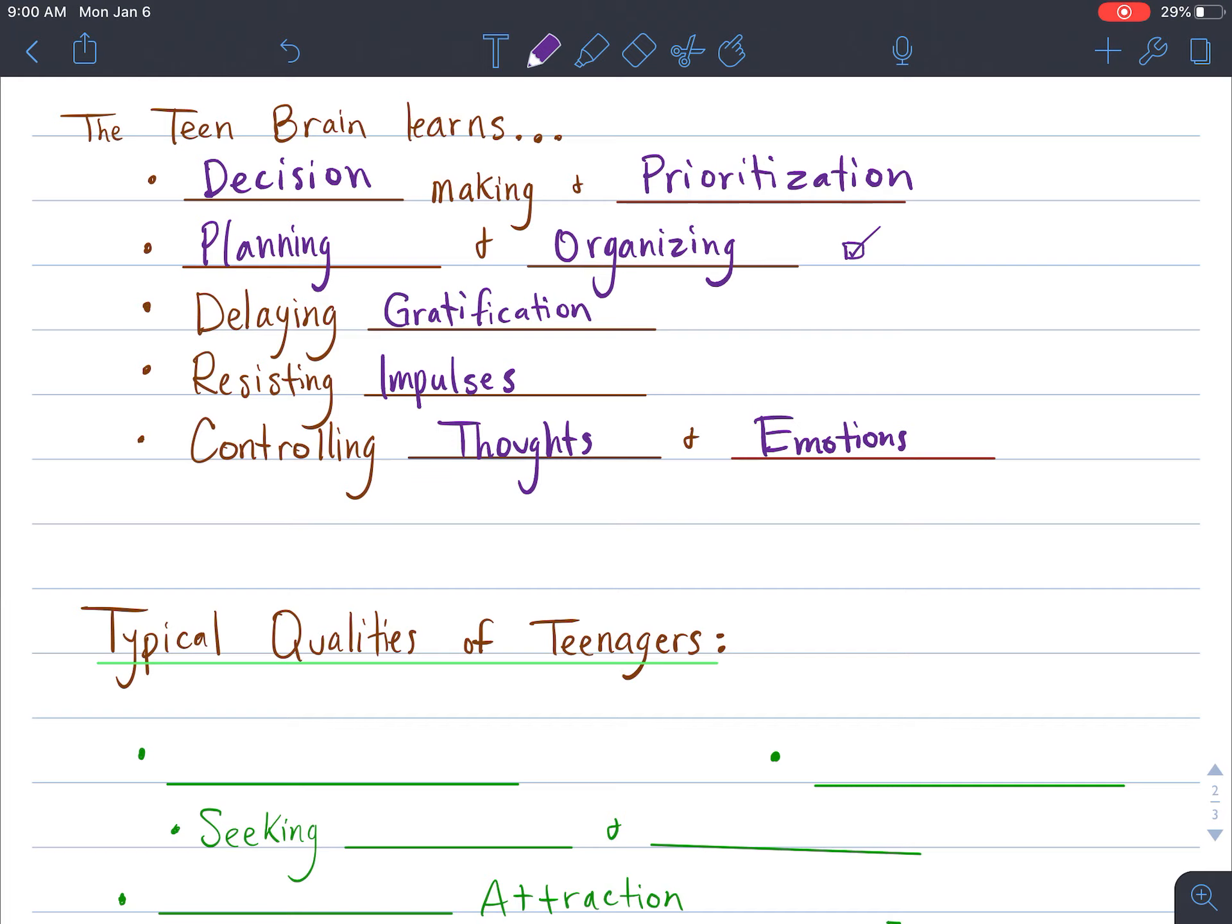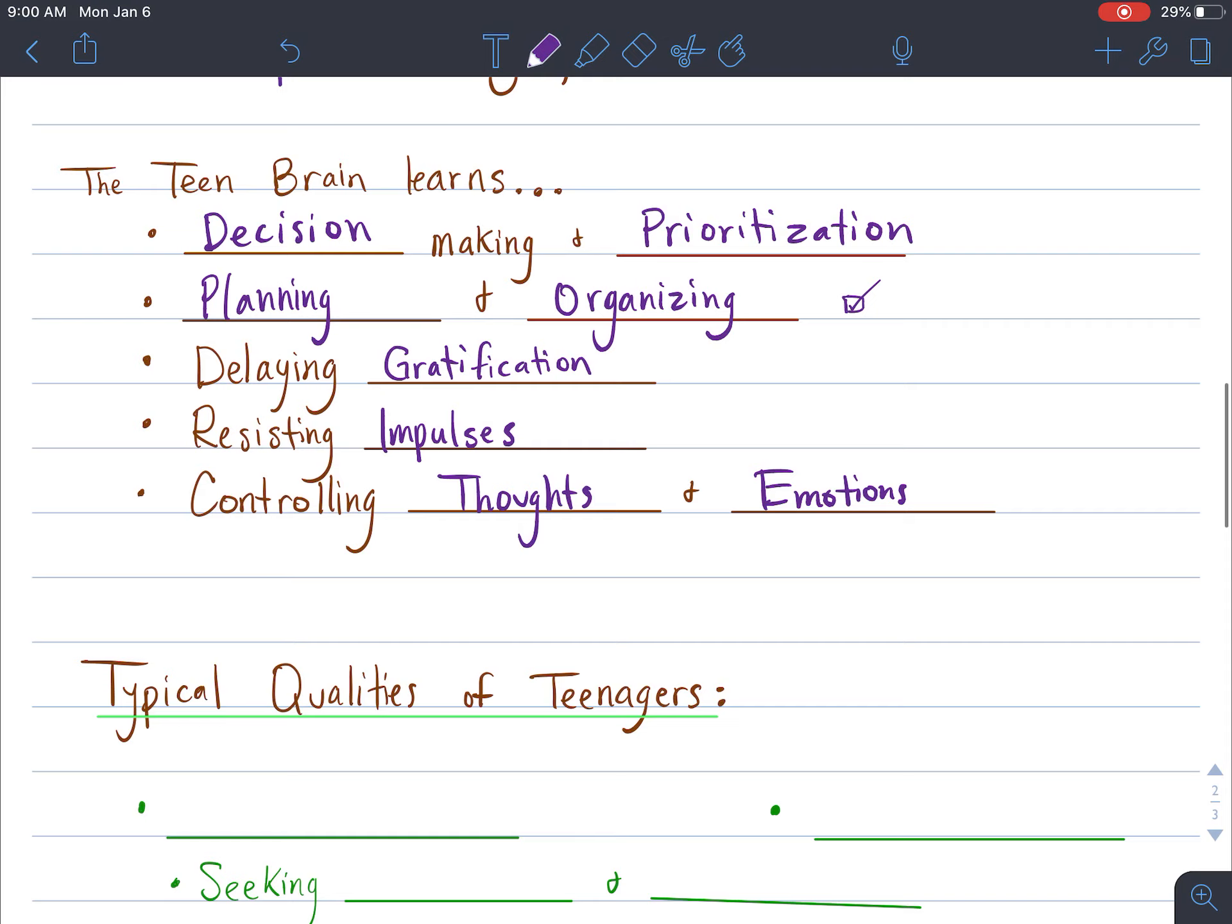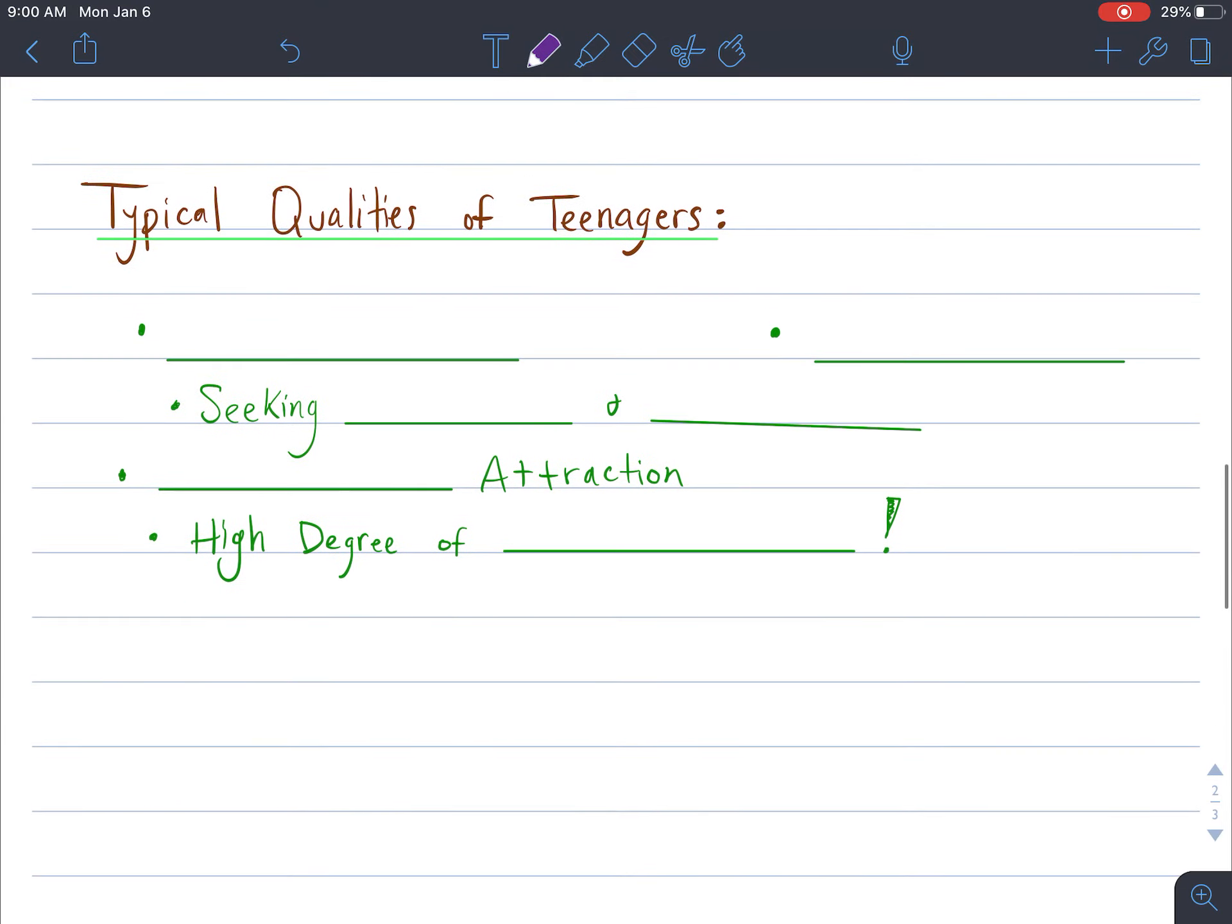These are things that the teen brain is learning and practicing. So therefore, since you're still practicing those things, some typical qualities of teenagers when we look at our society, you know, when you look back on your teenage years and you look at other teenagers in your life or as you grow older, things that we're constantly seeing in teenagers...